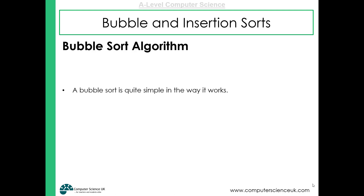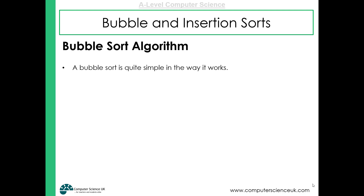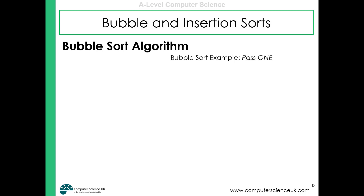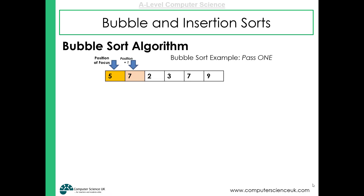The bubble sort algorithm is very simple. It repeatedly steps through a list of data, compares each pair of data that it comes across, and swaps them if they're in the wrong order. Here's an example of a set of data that the bubble sort is going to attempt to sort.